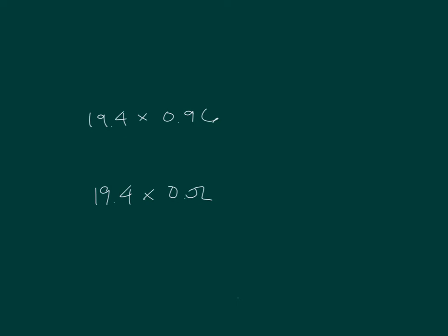Let's work that out. 194 tenths times 96 hundredths is going to equal thousandths.